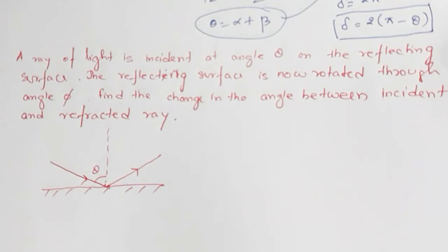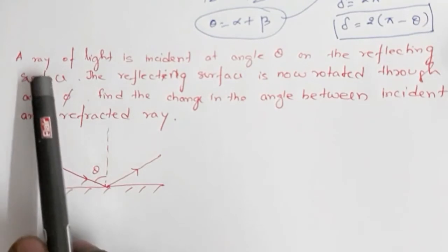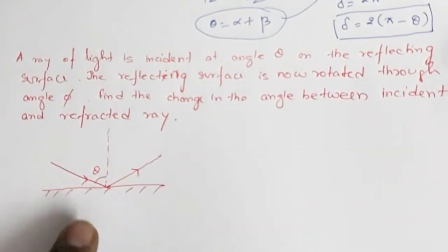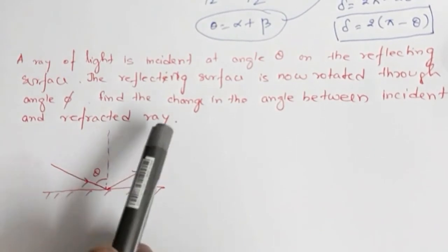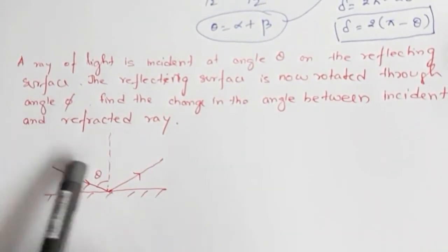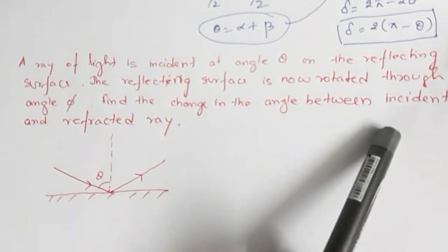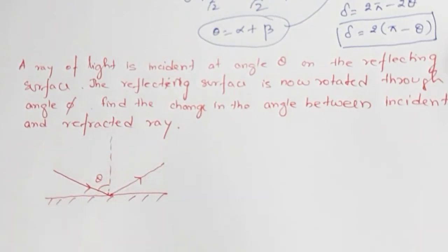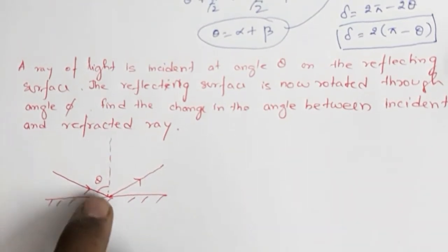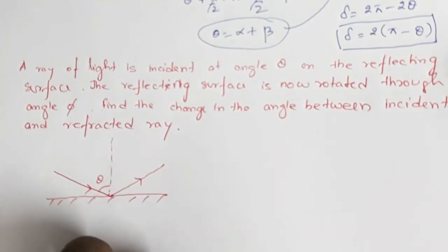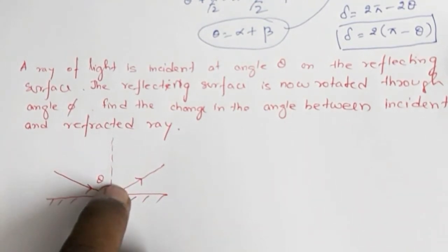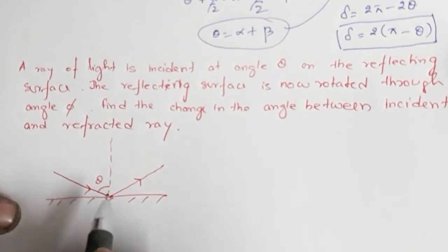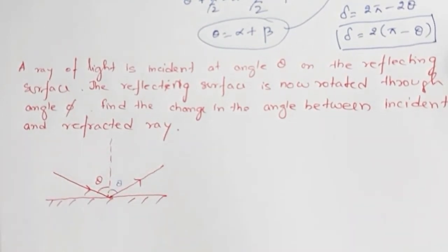Now let us find a way to approach this problem. A ray of light is incident at an angle theta on a reflecting surface. The reflecting surface is now rotated through angle phi. Find the change in the angle between the incident and the reflected ray. Initially, if the angle of incidence is theta, the angle of reflection is also theta, so the total angle between the incident ray and the reflected ray is 2 theta.